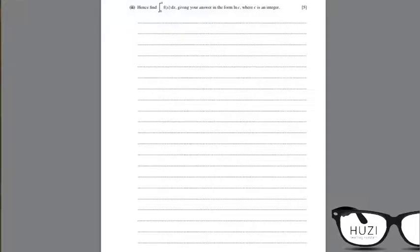Hence find integral of f(x) from 0 to 4, giving your answer in the form ln c. So we said that f(x) equals to 3 over 2x plus 1 plus 1 over x squared plus 9.